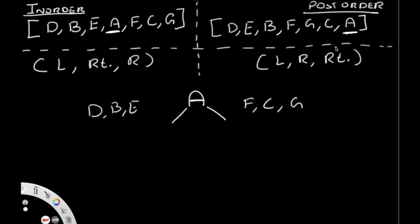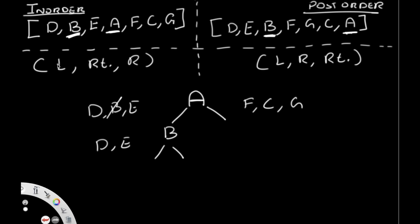We look for D, B, or E in the post-order traversal. The first one we come across is B, so B becomes the root of that subtree. We cross out B and its children are D or E — we don't know the order. To find out, we look for B in the in-order list. B is found there; to its left is D, so D is the left child, B is the root, and E is the right child. That solves the left part of the binary tree.